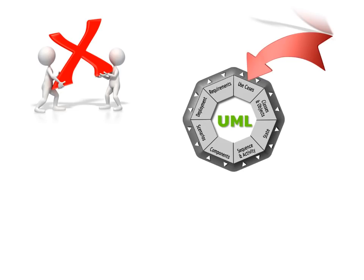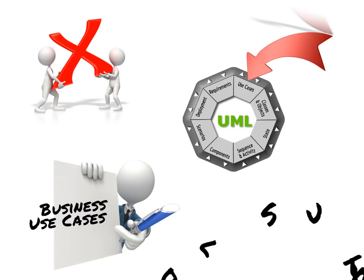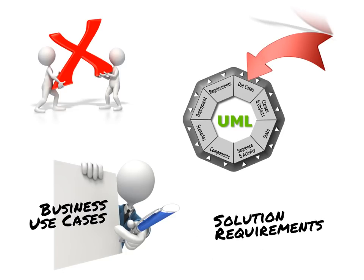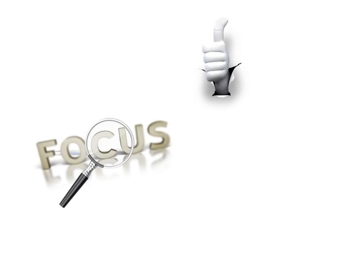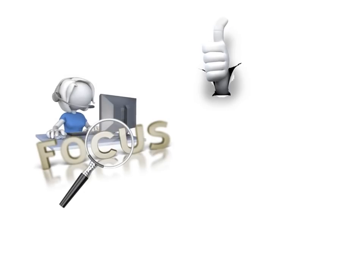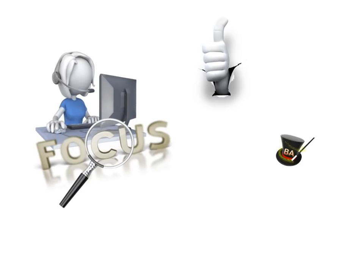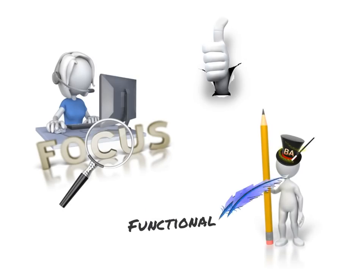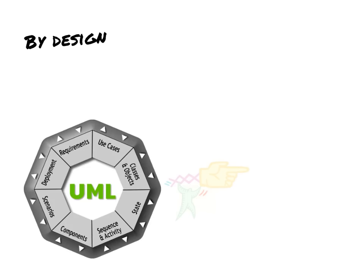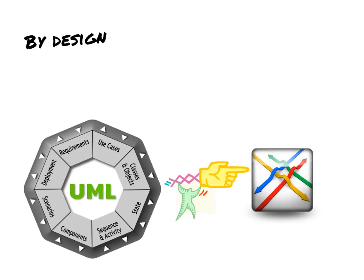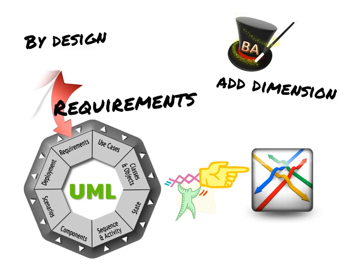One exception to that rule is the use of a concept called use cases. Business use cases are a very common documentation method for capturing the solution requirements for an evolving information technology solution. A major attribute of the use case is the focus on a single usage of the application by a single user. This gives the BA a phenomenal tool for expressing functional requirements. By design, the UML allows for extensions, giving it a great degree of flexibility and giving the BA opportunity to add dimensions to cover the requirements components.